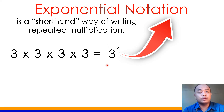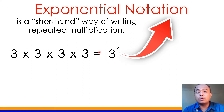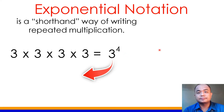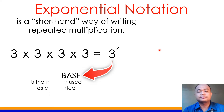A number expressed in exponential notation is usually composed of a base and exponent. What do you think is the number called as base here, and which is the exponent? Let's start with 3. We call 3 as the base. What do we mean by base? Base is the number used as a repeated factor.